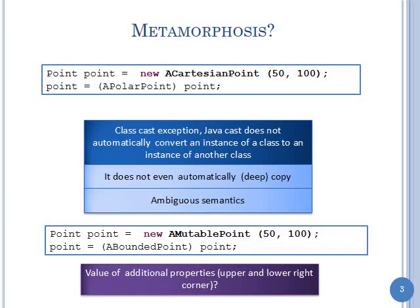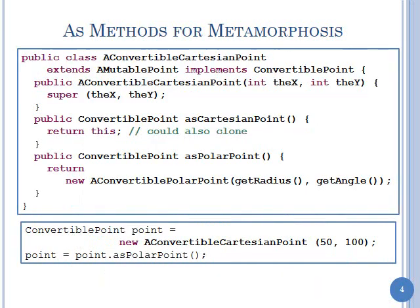Is such a metamorphosis something you'd ever want to do — convert an object of one interface to another? Why would you expect a cast to convert? When we talk of primitives, which I'll get to in a moment — but first, if you really want to convert, why would you want to? Is that a useful thing? Can you imagine a realistic application?